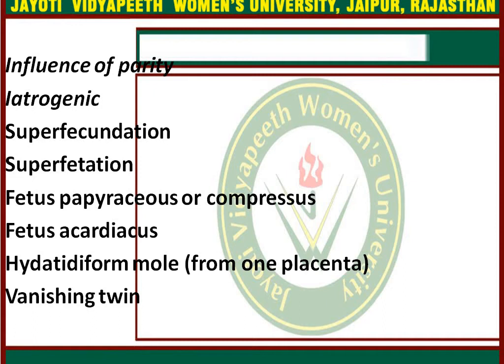Fetus papyraceus, or compressus, is the state which occurs if one of the fetuses dies early. The dead fetus is flattened, mummified, and compressed between the membranes of the living fetus and the uterine wall. A photograph of fetus papyraceus is available in the textbook.